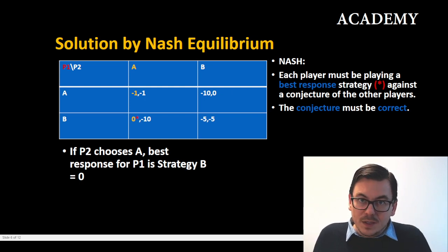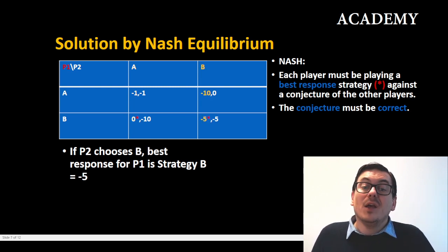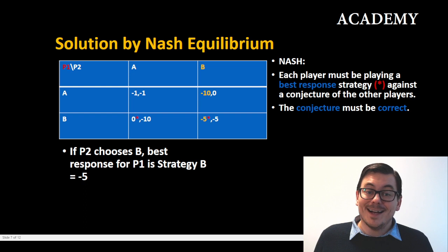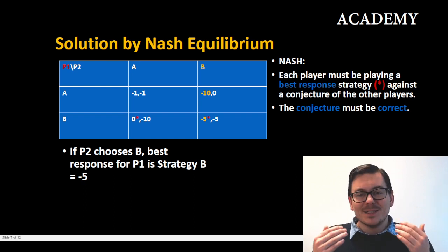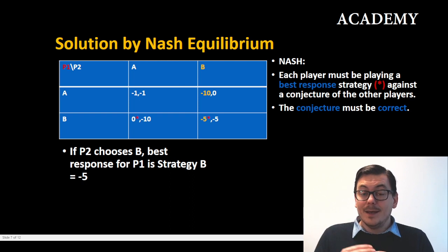We will continue this by looking at player two if he or she chooses strategy B. So in this case player one would get either minus 10 or minus five. Again the best response in the case that player two plays B is that player one also plays B.